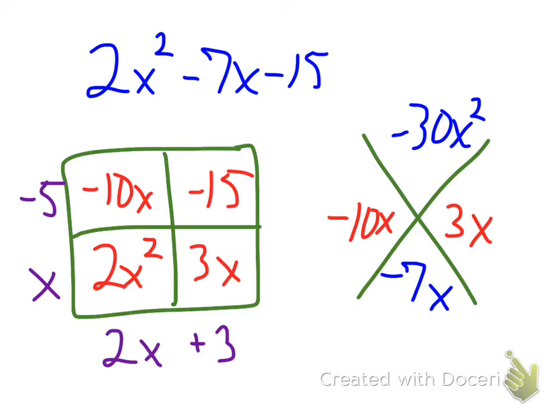One last check. This times this should always equal that box, and negative 5 and positive 3 do equal negative 15. So everything is working out well.